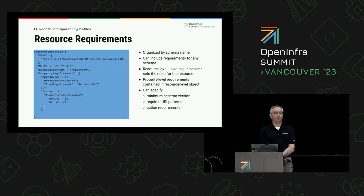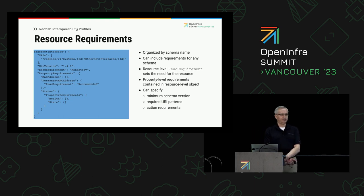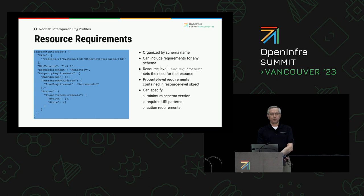This fleshes out the resource requirements section presented on the previous slide. The example here is for Ethernet Interface, which matches the name of one of the Redfish schemas. It's organized by schema name. It can include requirements for any schema of interest. The resource-level read requirement sets the fundamental need for the resource, and then there are property-level requirements embedded in there. You can specify minimum schema version, required URI patterns, and action requirements. Here we see that there's a read requirement on Ethernet Interface, and there are particular properties that are required.